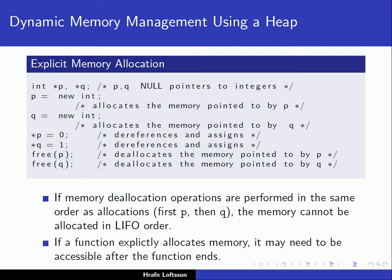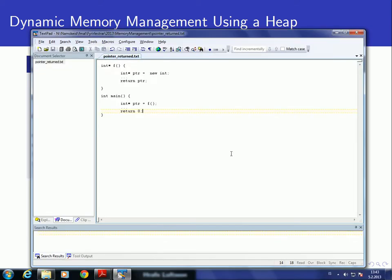This allocation of memory cannot happen on the runtime stack. One reason why that's the case is if a function explicitly allocates memory and returns a pointer to that memory, that memory has to be accessible after the function ends. If the memory was allocated on the runtime stack, it would not be available after the function ends because the activation record for that function would be deallocated. So let's look at an example.